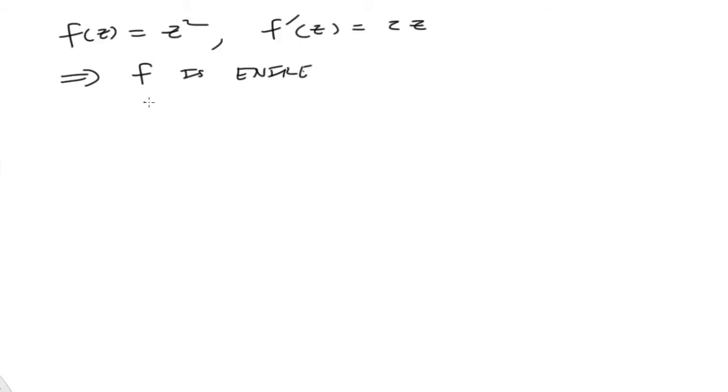Or z squared is entire. Okay. All right. So just like the rules for derivatives, if f and g are, if two functions are analytic, then of course f times g is analytic. It also implies that f plus g is analytic as well.